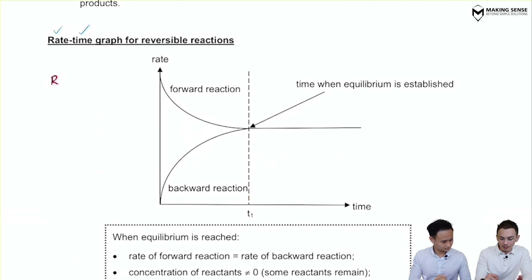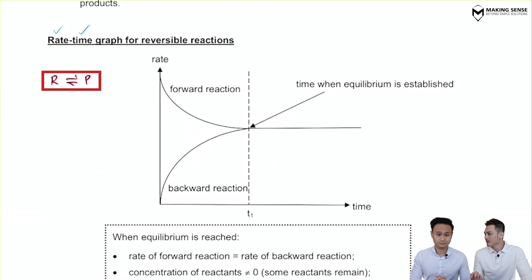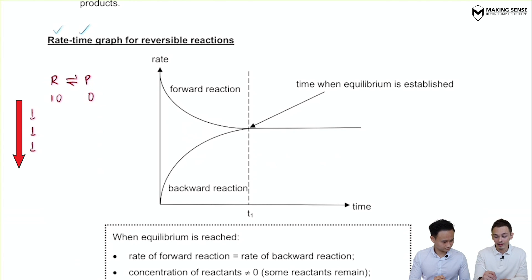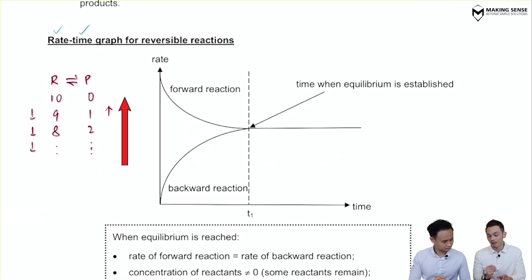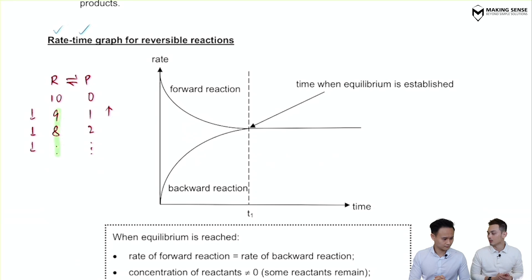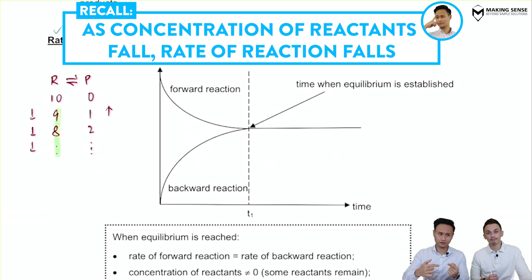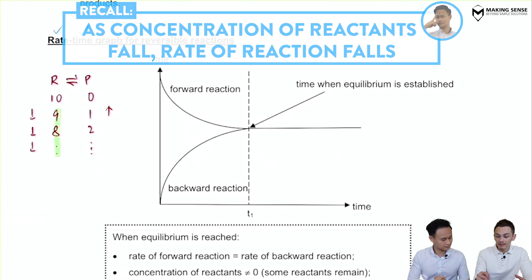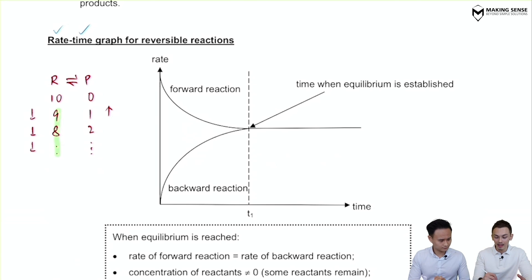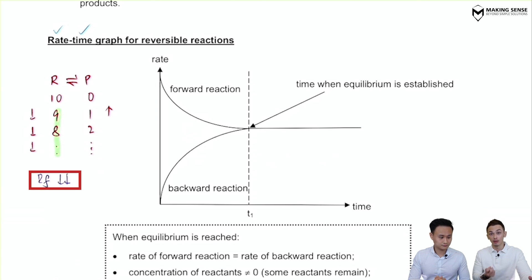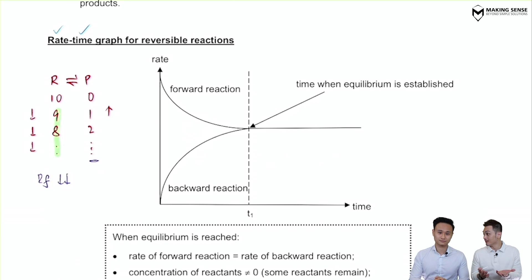Using a similar example — reactants changing to products, starting with 10 and 0 — the amount of reactants drops over time: 9, 8, and so on, while products increase: 1, 2, and so forth. As the concentration of reactants falls, from kinetics we know the rate should fall as well. So the rate of the forward reaction will be constantly dropping since there are fewer collisions. Meanwhile, as more products accumulate, the rate of the backward reaction increases.